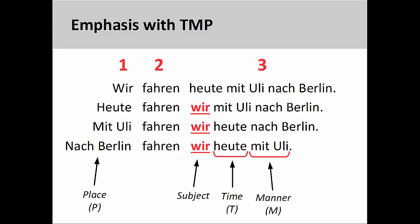It is also possible for the place element to appear in the first position. And, as to be expected, the time and manner elements remain in the third position in the regular order. The subject of the sentence, as is to be expected, again appears immediately after the verb.